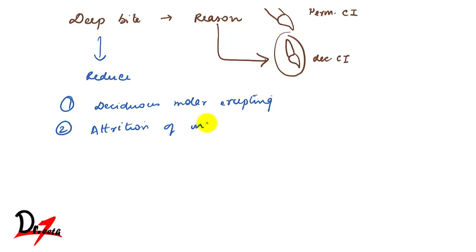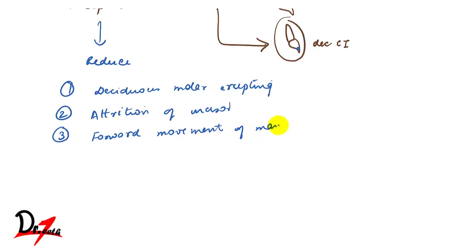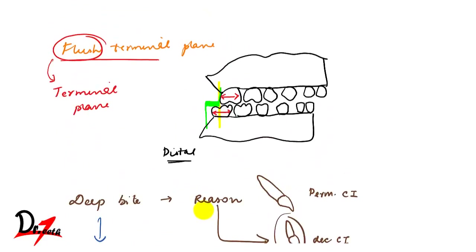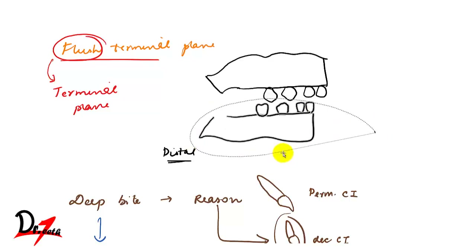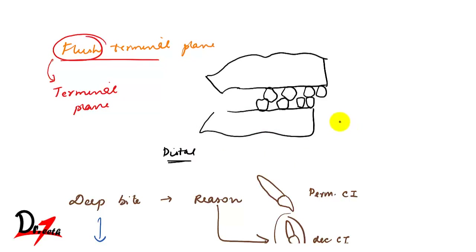Attrition of the incisors also reduces the deep bite — as the incisors get worn down, the overbite decreases. The third reason is the forward movement of the mandible. I'll show it here: if we see the teeth overlapping, that represents a deep bite.